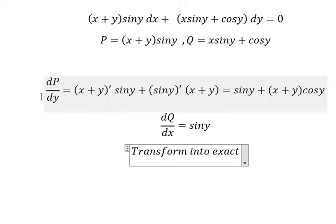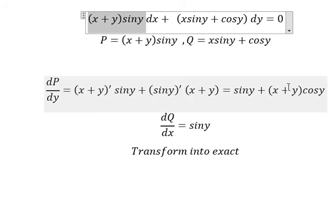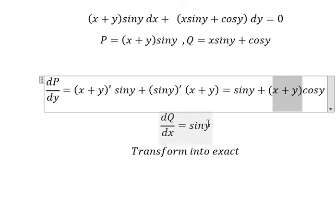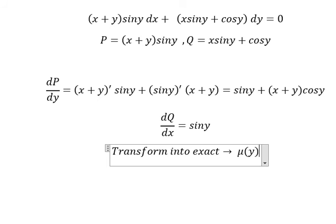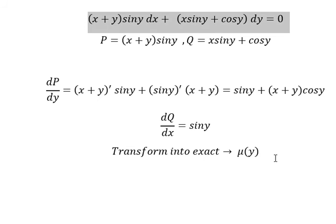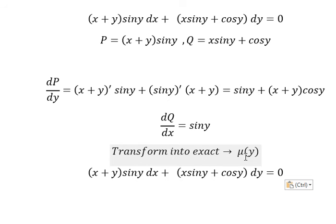Looking carefully, we can see that terms with x·y, cos(y), and sin(y) repeat in a similar pattern. So we will use an integrating factor μ(y), which will allow us to simplify. We multiply both sides by μ(y).